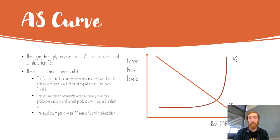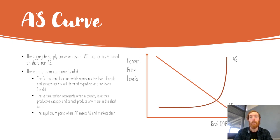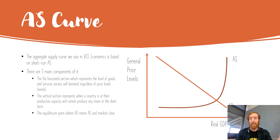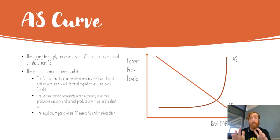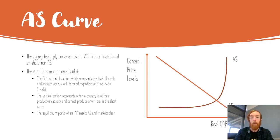When we've got an aggregate supply curve it looks a little bit like this. In VCE economics we're looking at short-run aggregate supply. There's a lot of stuff about Keynesian economics and all that, but you don't need to know that depth in VCE. On the VCE exam when they ask about aggregate supply, they're talking about short-run aggregate supply, and there are three main components of it that you need to be aware of.